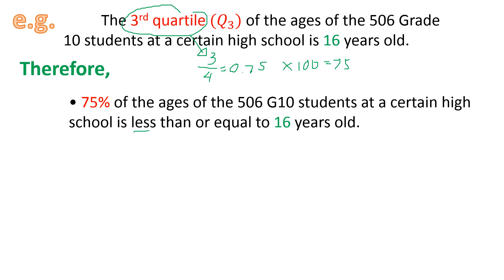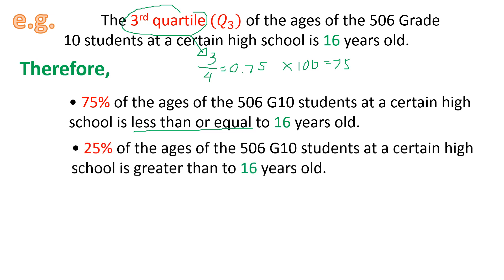It is always less than or equal on our initial or direct interpretation based on the data given. For the complement, if we have 75% on the position, the complement of 75% is 25%, subtracting 75 from 100. So 25% of the ages of the 506 grade 10 students at a certain high school is greater than 16 years old.